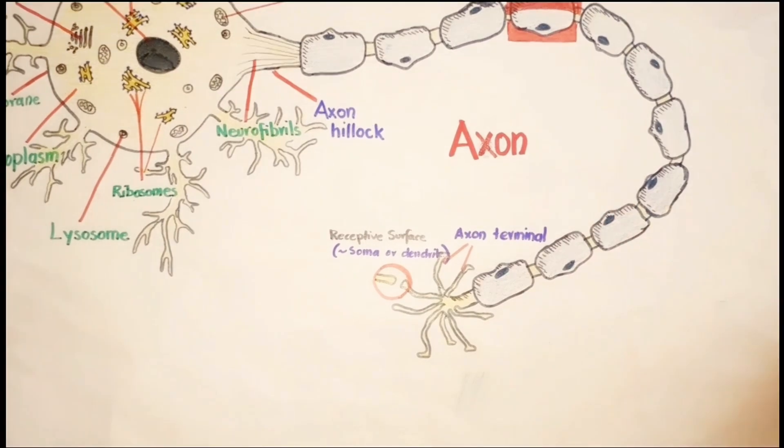Larger axons of peripheral neurons are enclosed in myelin sheath produced by Schwann cells. As here I have drawn a myelinated neuron.